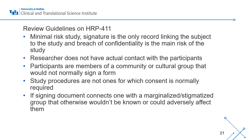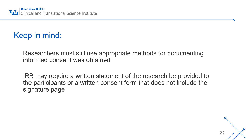Additional examples include when signing a document would connect someone with a marginalized or stigmatized group — such as a study involving illicit drug users, sex workers, or victims of domestic abuse. Researchers should still use appropriate methods to document that informed consent was obtained, even without a signature. In many cases the IRB may still require a written statement of the research provided to subjects, and researchers can provide a consent form without a signature page.